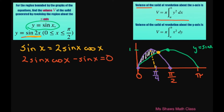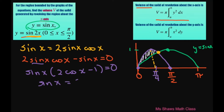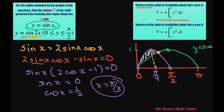That equals 0, and we'll factor out a sine of x. That gives sine of x times 2 cosine of x minus 1 equals 0. Now setting each factor to 0: sine of x equals 0, or cosine of x equals 1 half. And that's going to occur when x is pi divided by 3. So our interval is going to be from 0 to pi divided by 3.